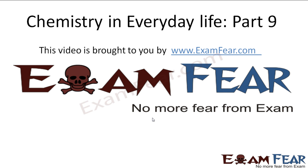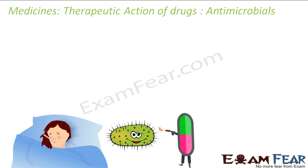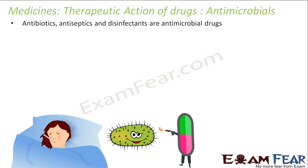Hello friends, this video on chemistry in everyday life part 9 is brought to you by examphia.com. The next type of drug is antimicrobial drugs, and there are three types: antibiotics, antiseptics, and disinfectants. Antiseptics and disinfectants are used to clean inanimate objects. As the name suggests, antimicrobial drugs kill the microbes that make you sick.